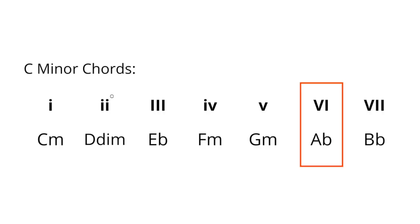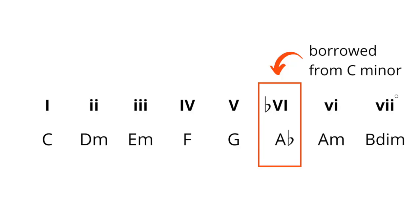Another very cool common borrowed chord is taking the sixth chord from the parallel minor key. In C minor, the six chord is A flat major. We call this the flat six chord. Why? Because in the key of C — C, D, E, F, G, A — A is the sixth, and this is an A flat chord, so we call it the flat six. It's all in relation to the key we're in, not the key it's coming from.